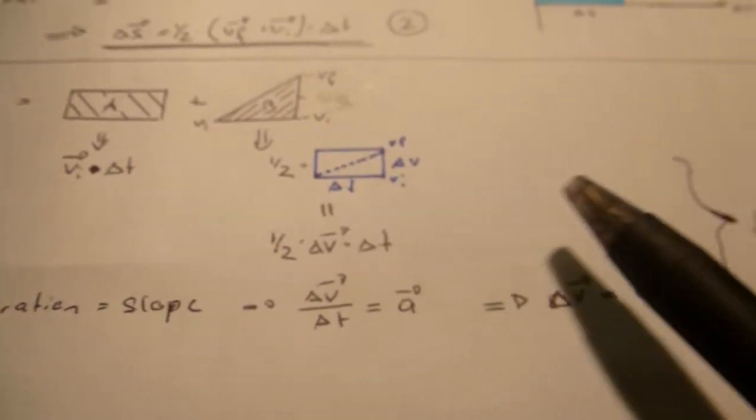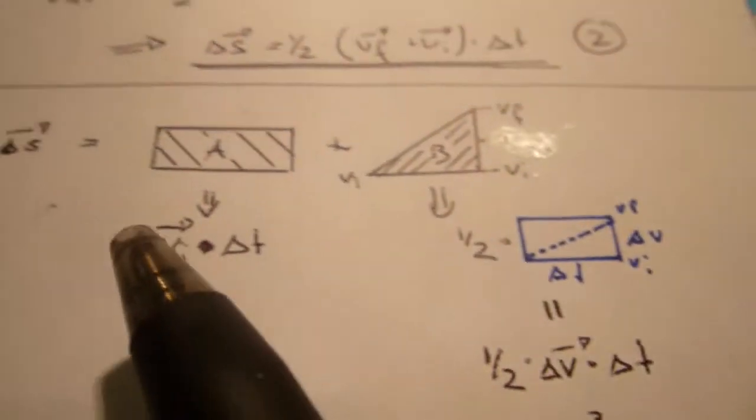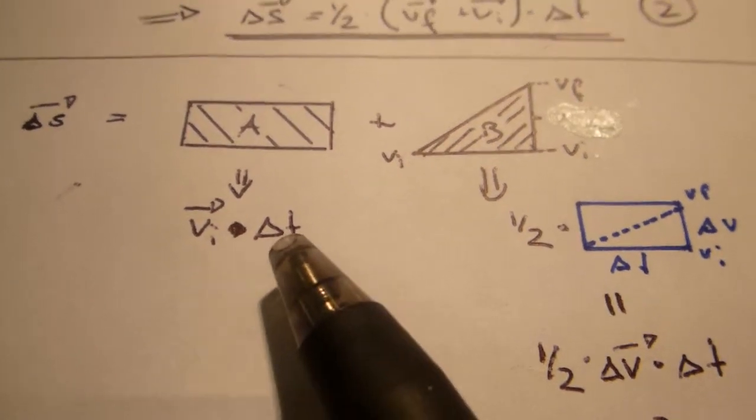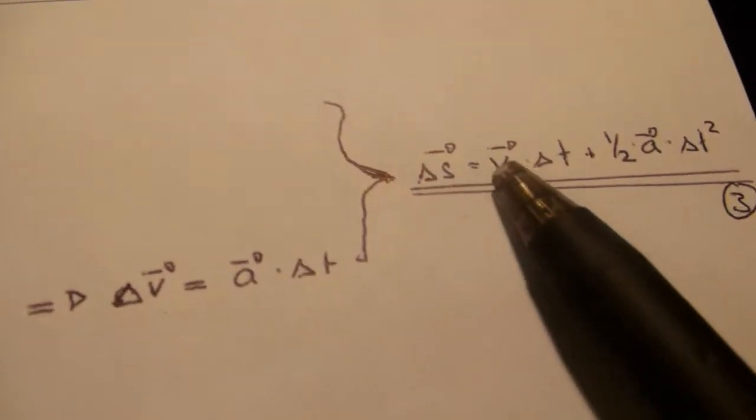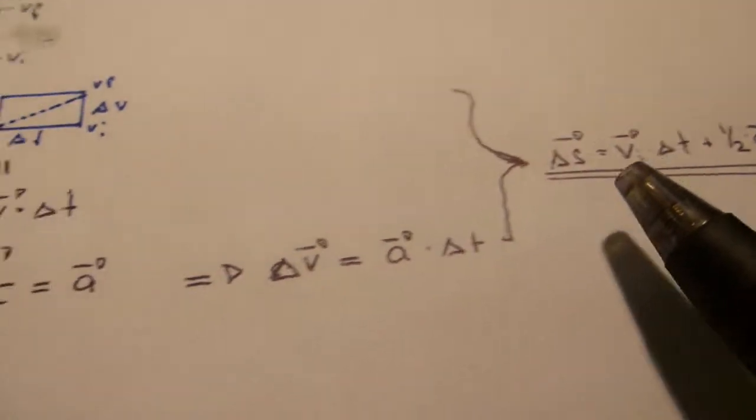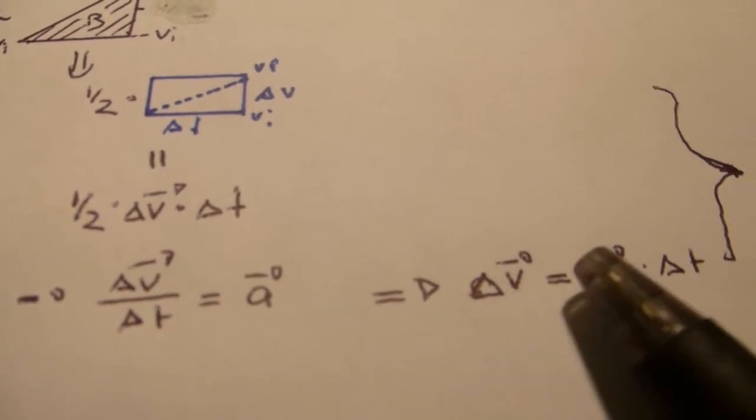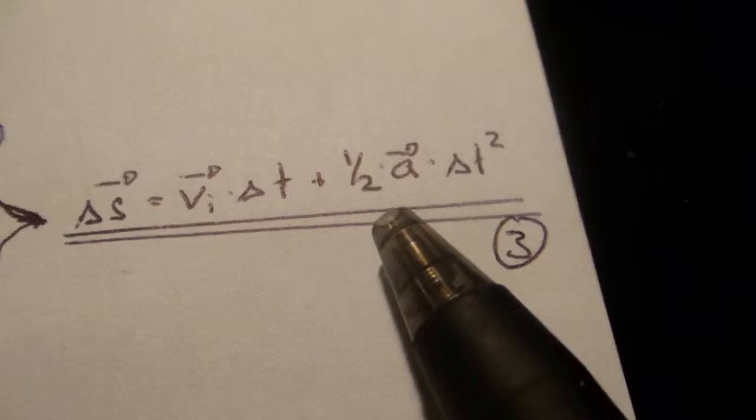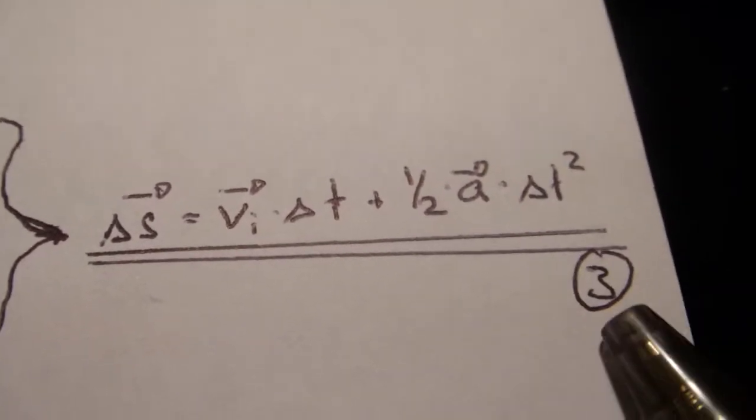Now if we combine those two here, we get delta S is V initial times delta T, plus one half times delta V, which is A delta T times delta T, which gives one half A delta T squared, which is our third equation.